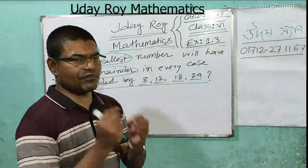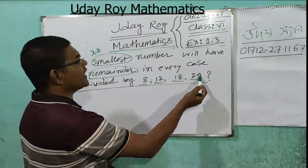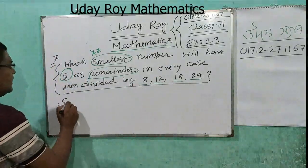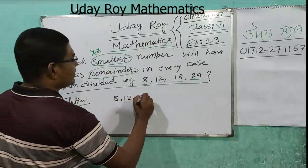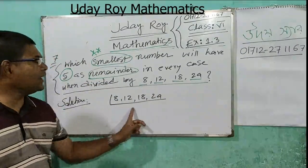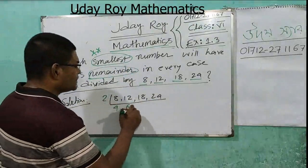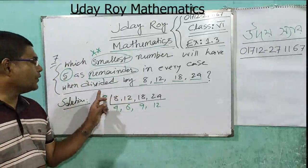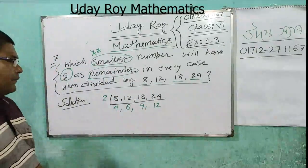Find out the LCM of these numbers first. LCM of 8, 12, 18, 24. You can see here — all are even numbers, so it will go by 2. Dividing: 4, 6, 9, 12.